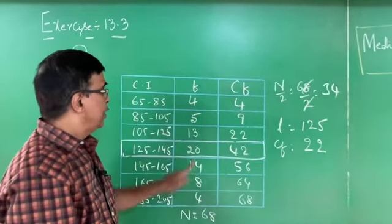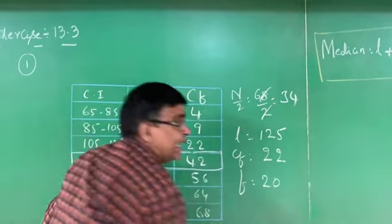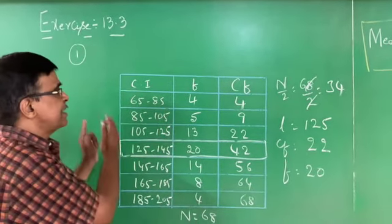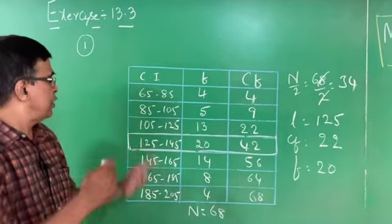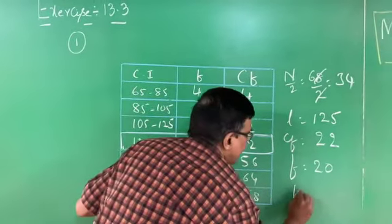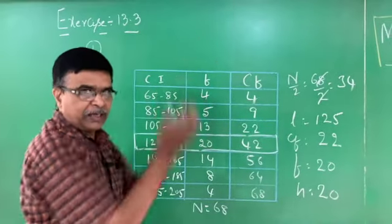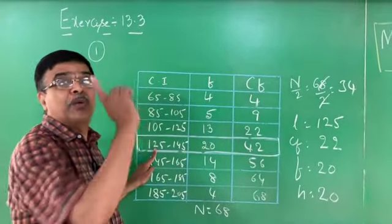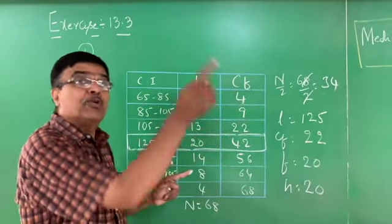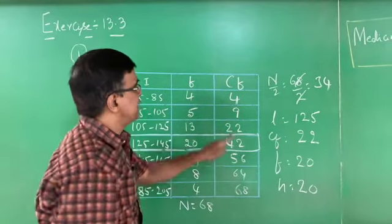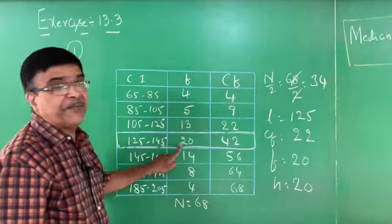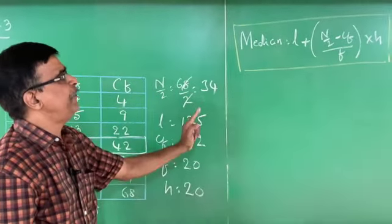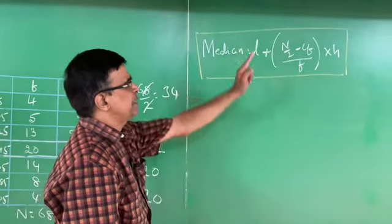What is CF? Cumulative frequency of the class interval preceding the median class is 22. So CF = 22. The frequency F of the median class is 20. H, the size (width) of the class interval, is 20, since each interval spans 20 units (e.g., 65+20=85, or 125+20=145).